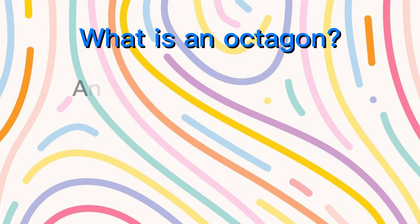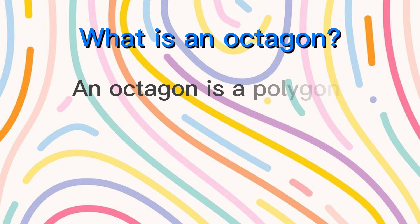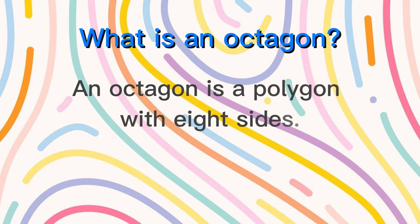What is an octagon? An octagon is a polygon with eight sides.